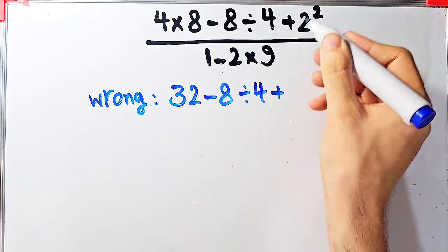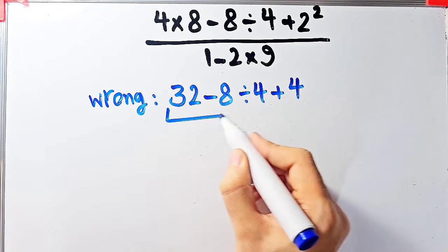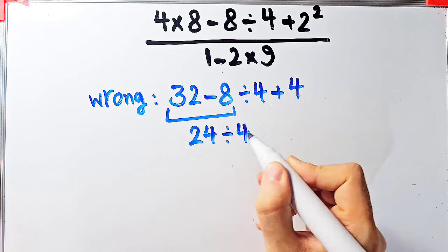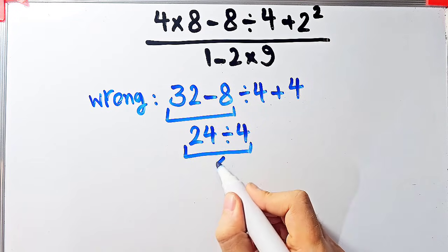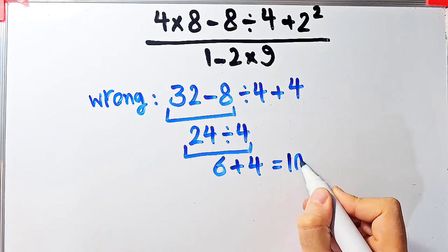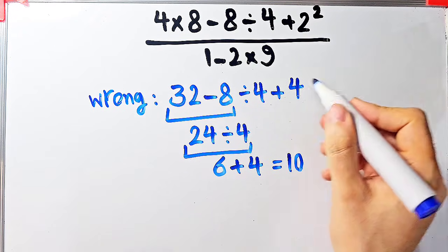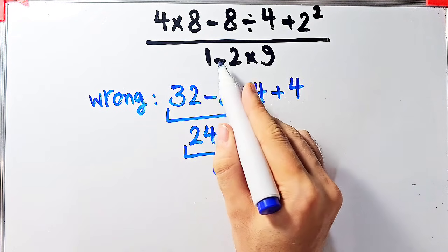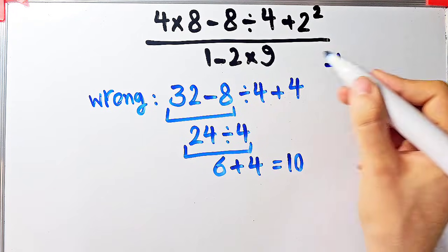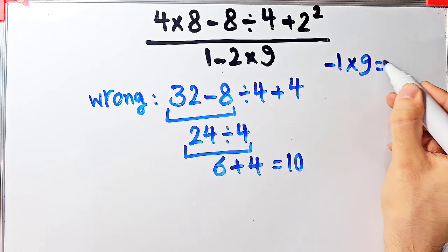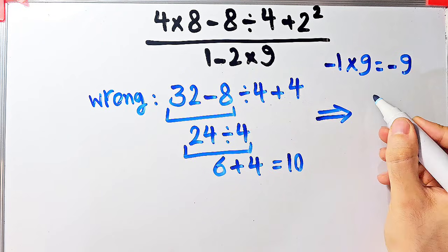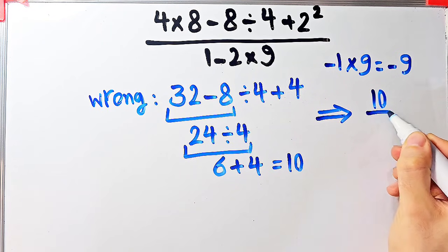Then 32 minus 8 equals 24, 24 divided by 4 equals 6, and 6 plus 4 equals 10. After that they simplify the denominator: 1 minus 2 then times 9. 1 minus 2 equals negative 1, and negative 1 times 9 equals negative 9. They say the final answer of this question equals negative 10 over 9.